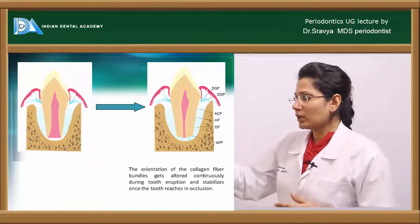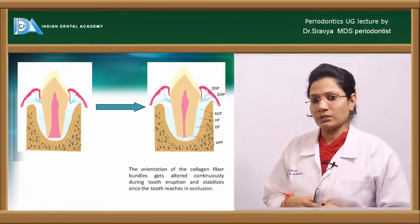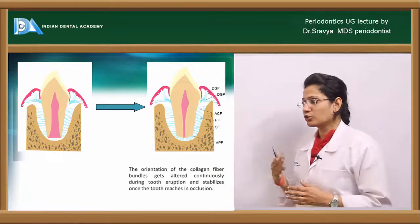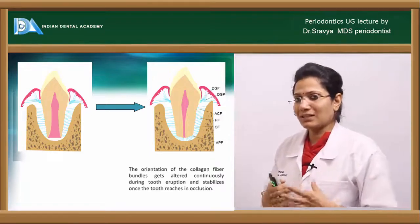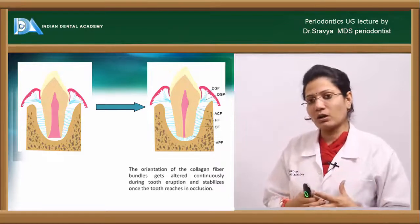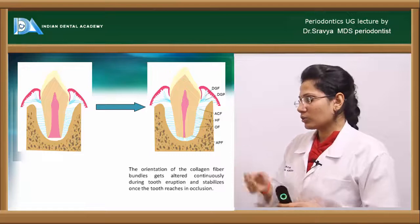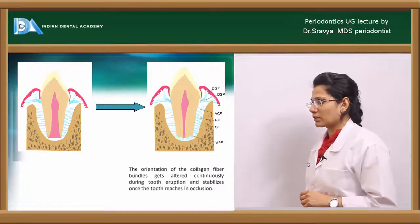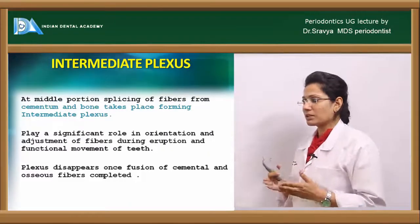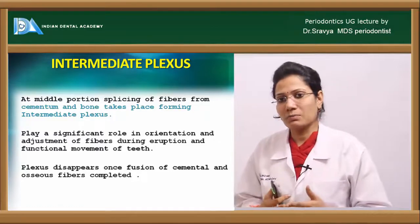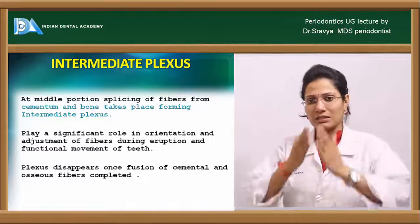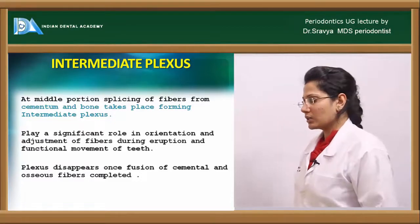Initially, as soon as the periodontal ligament fibers are formed, they are just arranged. But over a period of time under continuous tooth eruption, the tooth gets stabilized. Once it forms into occlusion, the principal fibers of the periodontal ligament are arranged in certain bundles. The intermediate plexus refers to fibers present in the middle portion, splicing between the fibers arising from the cementum and those from the alveolar bone proper where they intermingle in the center area.